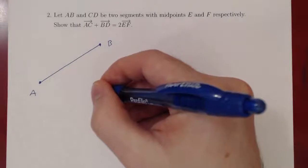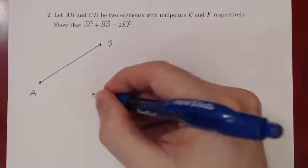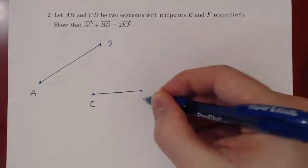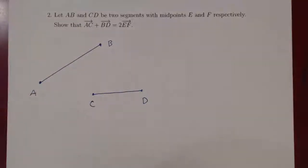So we could draw, say, segment CD this way. Suppose this is point C, and this is point D. What else do we know?